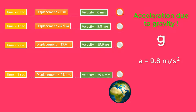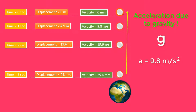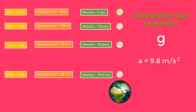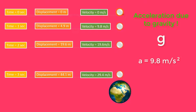Here is a tricky question: if I throw a body in an upward direction, what will be its acceleration at the peak point? If I throw a body with an initial velocity of 29.4 m/s upward, after 3 seconds its velocity will be 0 m/s. Thus at the peak point, the velocity of a body is 0 m/s — but still its acceleration is 9.8 m/s².